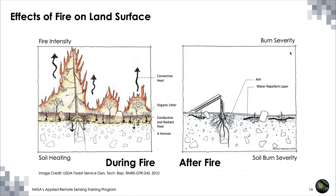Here we have a figure summarizing the effects of fire on the land surface, illustrating fire intensity's effects on above-ground vegetation as well as below-ground soil properties. You can also see the transition of landscape properties from the during-fire stage to the post-fire stage. When we talk about burn severity, we're typically referring to changes in both vegetation and soil properties, though with remote sensing we're mostly monitoring the vegetation aspect.